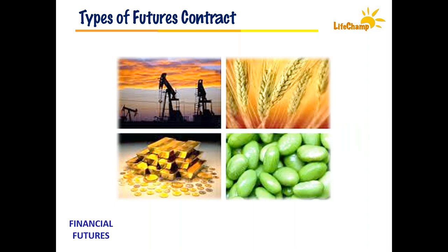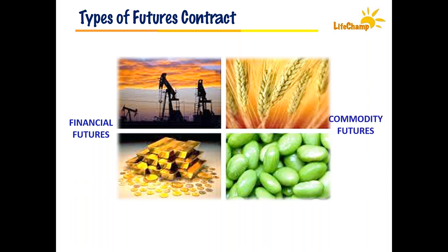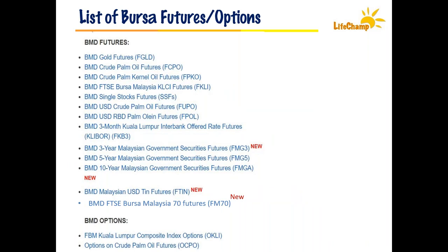There are different types of futures contracts. We have financial futures, which include stocks, indices, and interest rates — the most common being indices. The other type is commodity futures, which include crude palm oil, crude oil, gold, silver, and soybean. In our Bursa Malaysia Derivatives market, we have an extensive list: gold futures, palm oil, index futures, interest rate futures, and options. The most liquid and most popular are the crude palm oil futures (FCPO), and the next is our FKLI — the KLCI futures.